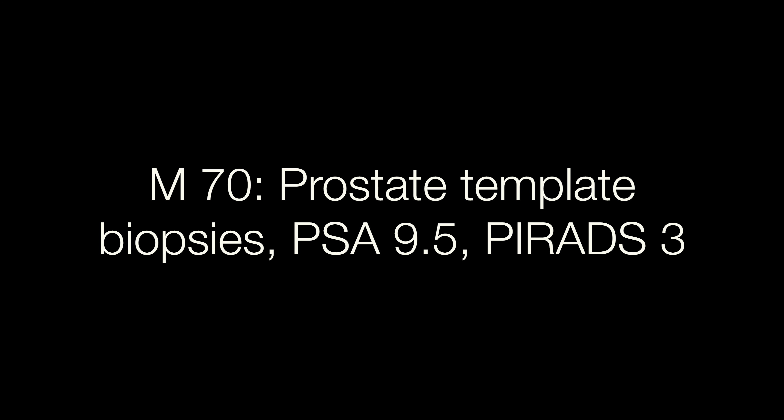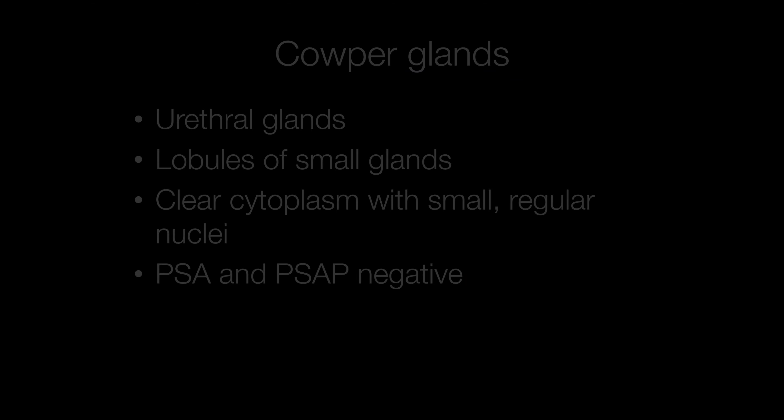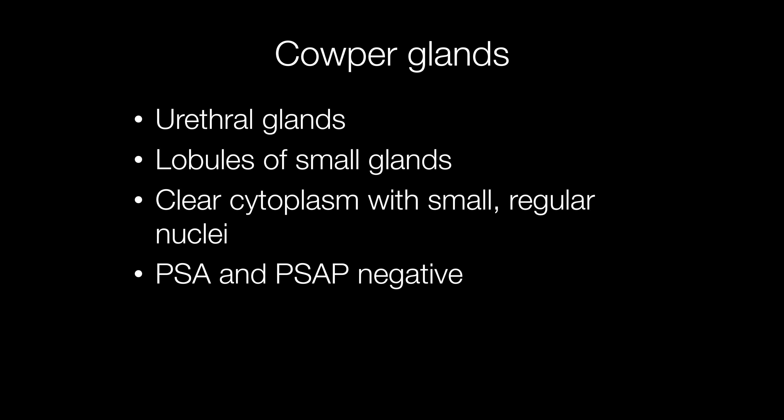Case number 9 was a male of 70 who had prostate template biopsies with a PSA of 9.5 and PIRAD 3. This is something that one may see occasionally in prostate biopsies, and this is an example of Cowper glands. These are lobules of small urethral glands with clear cytoplasm and small regular nuclei. The PSA and PSAP stains are negative. This is a nice example of a lobule of Cowper glands with clear cytoplasm and very small regular nuclei.